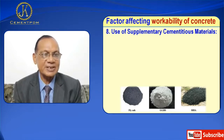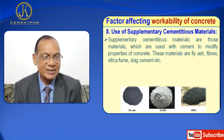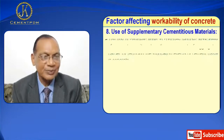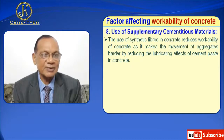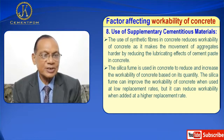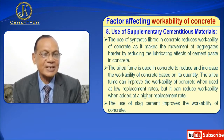Next is use of supplementary cementitious materials. Supplementary cementitious materials are those materials which are used with cement to modify properties of cement. These materials include fly ash, fibers, silica fume, slag cement, etc. The use of fly ash improves the workability of concrete by reducing the water content required for the same slump value. The use of synthetic fibers in concrete reduces workability as it makes the movement of aggregates harder by reducing the lubricating effect of cement paste. Silica fume can improve workability when used at a low replacement rate, but reduces workability when added at a higher replacement rate. The use of slag cement increases the workability of concrete.